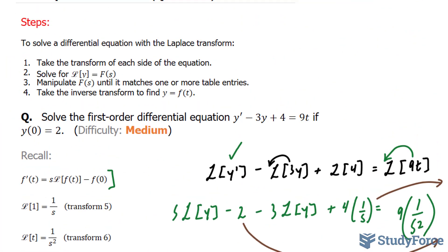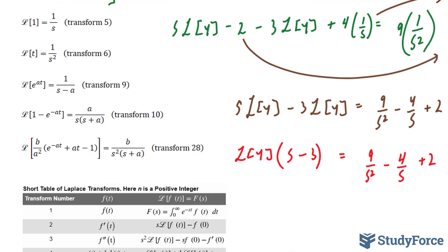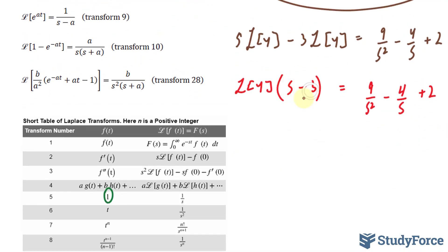Let's see where we are in our steps. In step number 3, they say manipulate F(s) until it matches one of the tables. Well we haven't done that yet, because we haven't solved for the Laplace transform of y. To do that, I'll divide both sides by (s − 3).